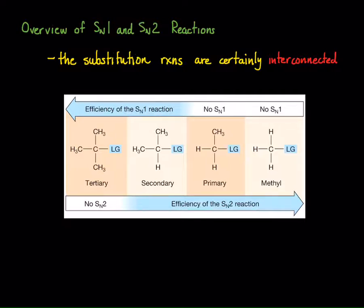Conversely, as we go from left to right, we increase SN2 substitution efficiency. As you go from a more bulky substrate in a tertiary to a less bulky substrate in a methyl, the SN2 mechanism efficiency increases. The reason is that the nucleophile is unhindered toward the carbon with the leaving group. We go so far as to say for tertiary substrates there is no SN2, but you can get an SN2 reaction mechanism for secondary. Primary and methyl substrates — SN2 is the main driving mechanism of these types of reactions.